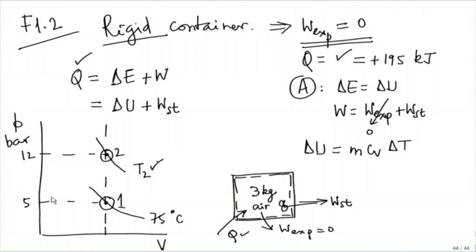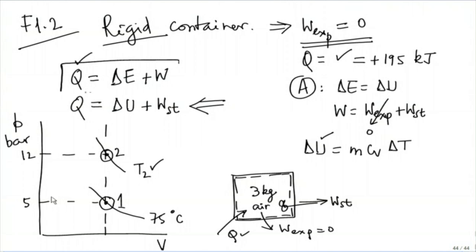The moment you determine T2, you can determine delta U, because M is given as 3 kg, the value of Cv is specified. Then in the first law, the derived form - we always start from Q equals delta E plus W - the final derived form will be Q equals delta U plus W_stirrer. Delta U has been calculated, Q is given, so W_stirrer is the only unknown. I hope that satisfies you, over to you.